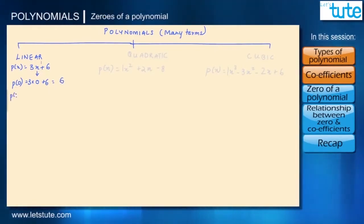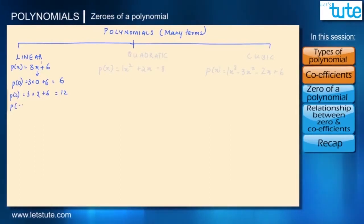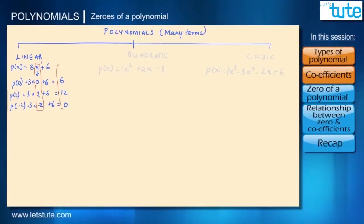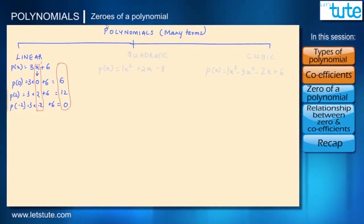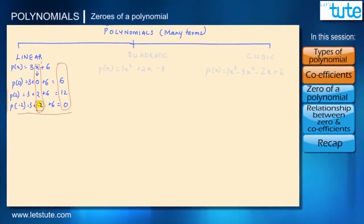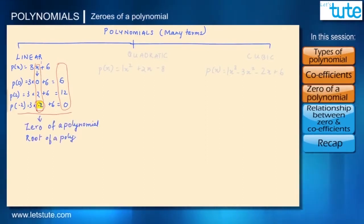Let's say x is equal to 2; p(2) is 12. Let's say x is equal to minus 2 — a negative number. That equals 0. So when we take different values for x, the values for this polynomial also change. This means the polynomial depends on the variable x.